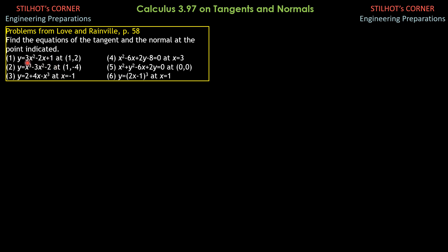So y prime is equal to 6x minus 2. When x is 1, that gives 6 times 1 minus 2, which is 4. So the slope of the tangent is 4, and therefore the slope of the normal is negative one-fourth.